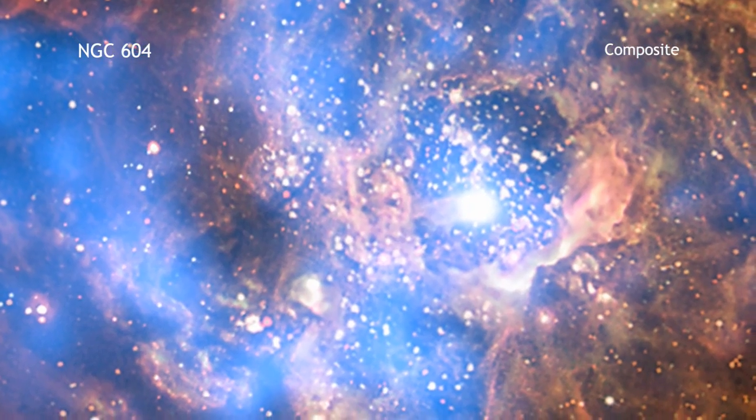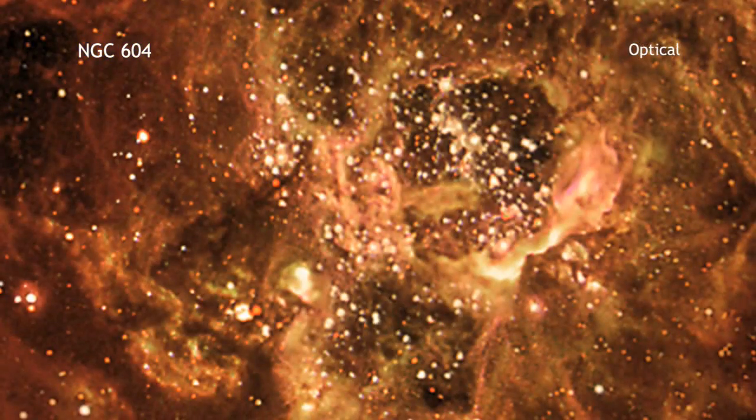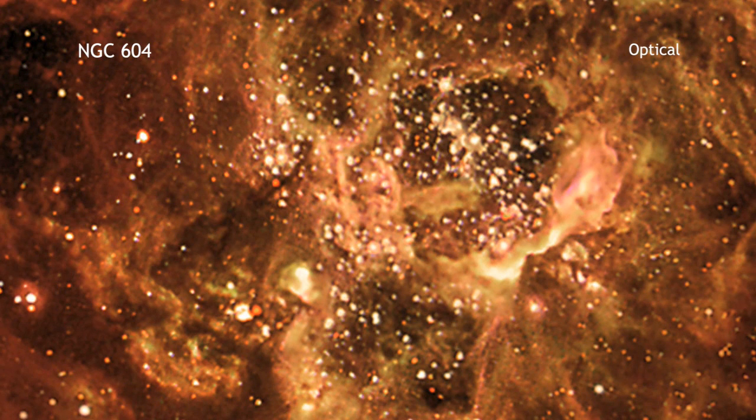In this composite image, X-ray data from Chandra are blue, while optical light data from Hubble are seen as red, green, and yellow.